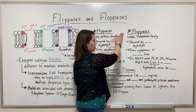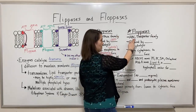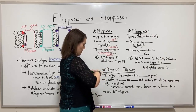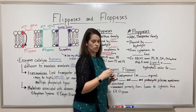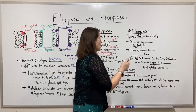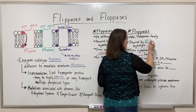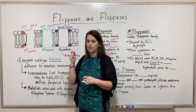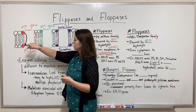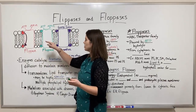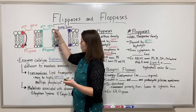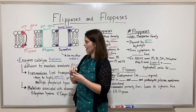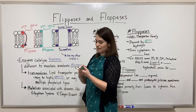Now let's talk about flopases. Flopases are in a different protein family — the ABC transporter family — rather than the P4 ATPase family. Flopases are also powered by ATP hydrolysis: that terminal phosphate is pulled off, the bond is broken, and energy is released. This makes sense because the flopases are having to move hydrophilic heads through the very hydrophobic fatty acid tails to get them to the other side of the membrane, so ATP needs to be used.